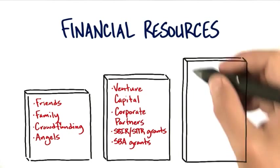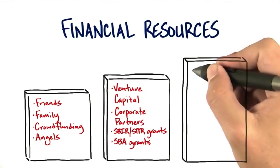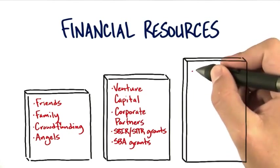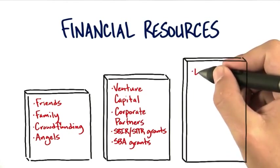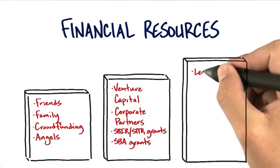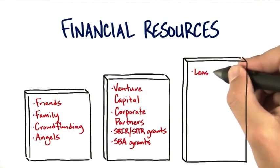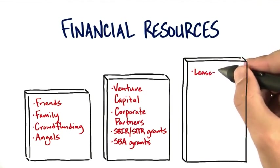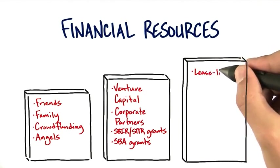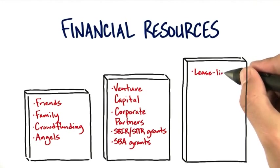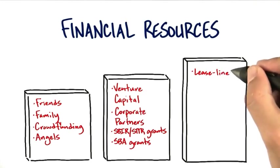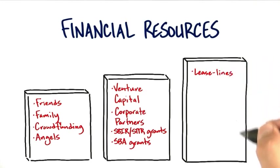For example, you might be able to go to a bank and have them finance the lease of expensive physical equipment. If you're buying tons of computers, vehicles, or manufacturing equipment, you might actually be able to get what's called a lease line so you don't have to pay cash for them.